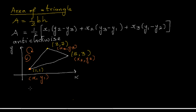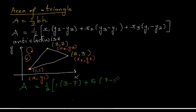This is basically the value of a determinant. Let me substitute the values: area A equals half times — x1 is 1, times (y2 minus y3) which is (3 minus 7), plus x2 which is 5 times (y3 minus y1) which is (7 minus 1), plus x3 which is 3 times (y1 minus y2) which is (1 minus 3).